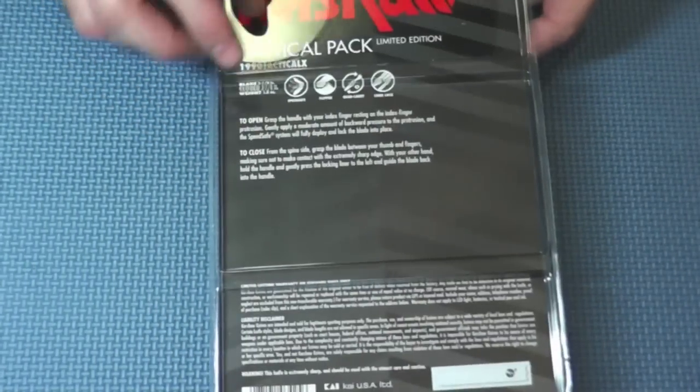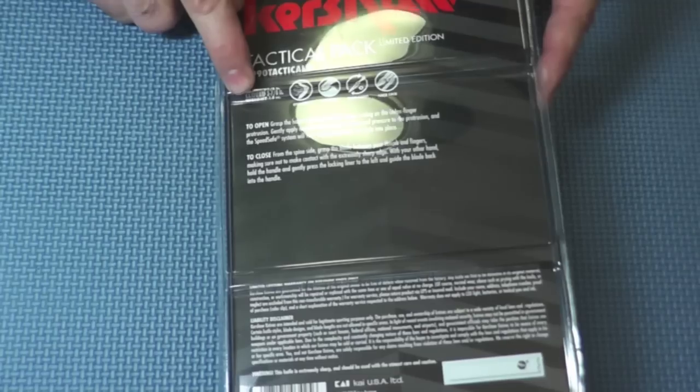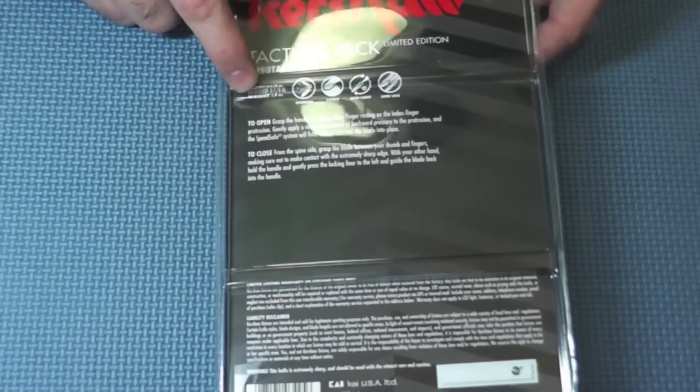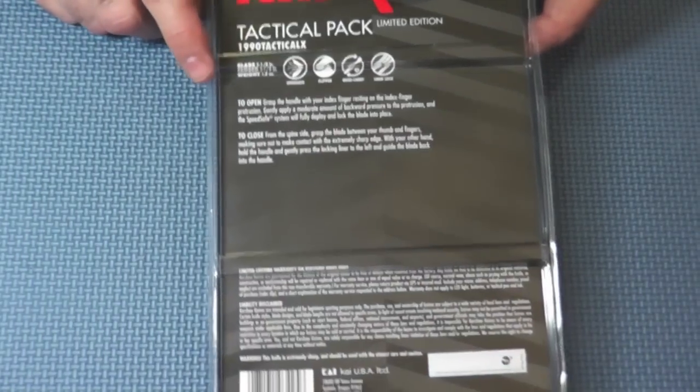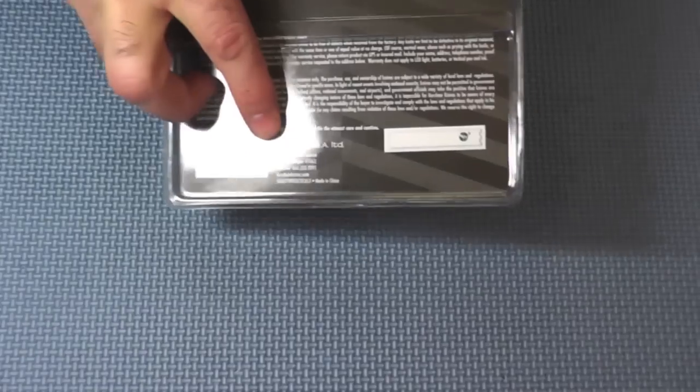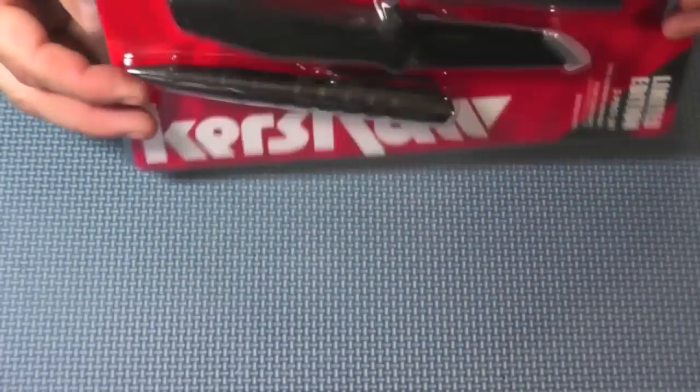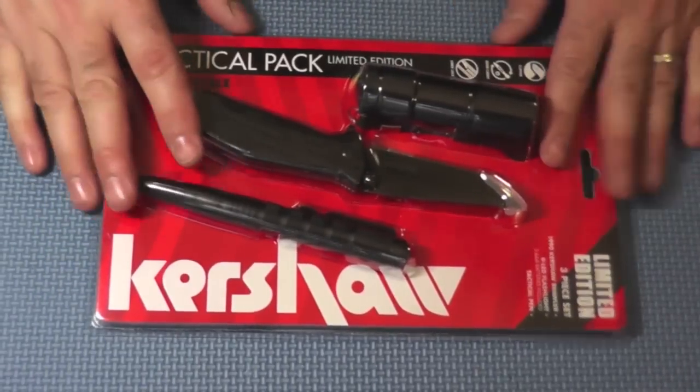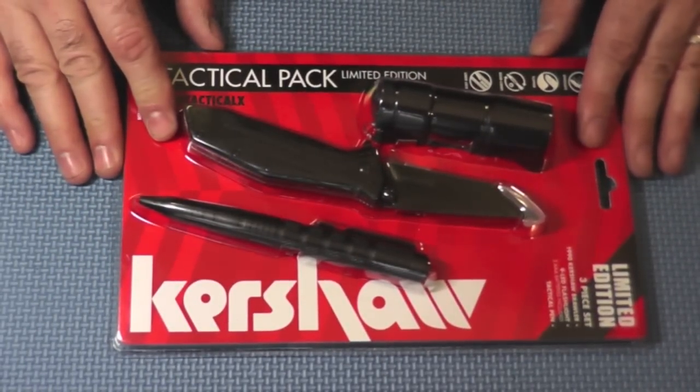On the back, they again show those same things. They have some specs here. They say the weight is 1.8 ounces, which is actually false. They actually messed up on the specs here. Really interesting. And down here, of course, made in China. How are you going to get it so cheap? Let's go ahead and open this up and start taking a real close look.